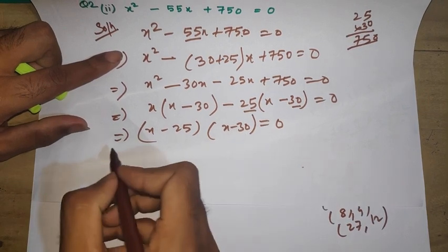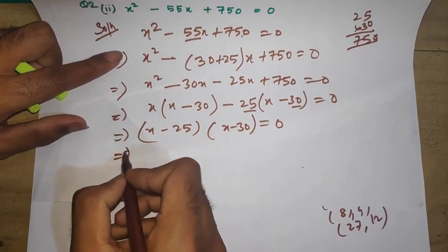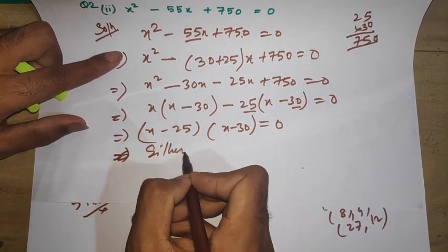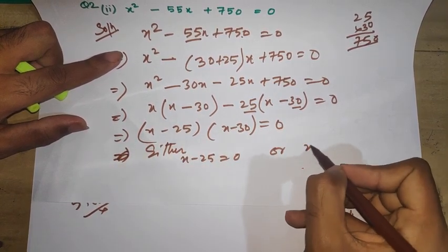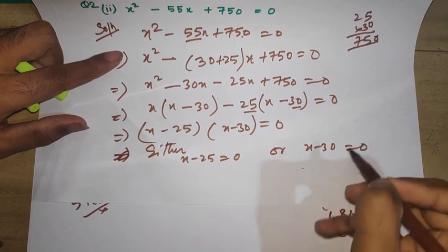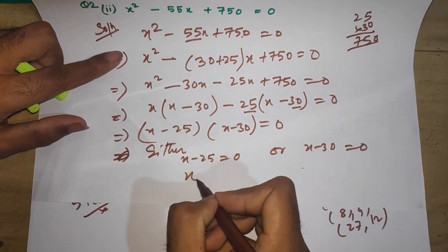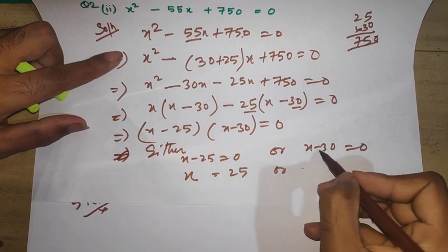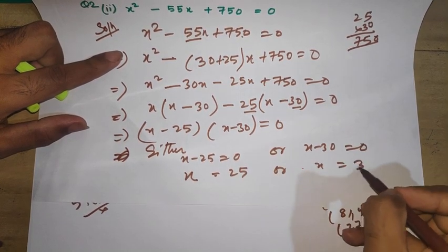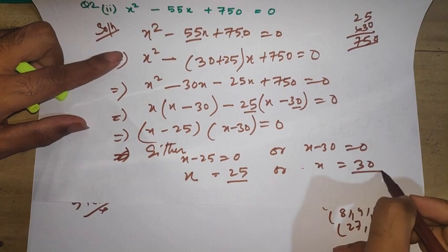I'm going to write (x - 25)(x - 30) = 0. This is amazing. Either x - 25 = 0 or x - 30 = 0.